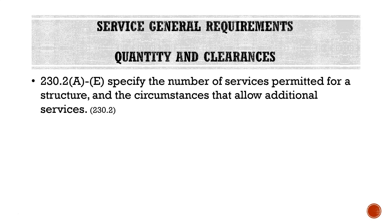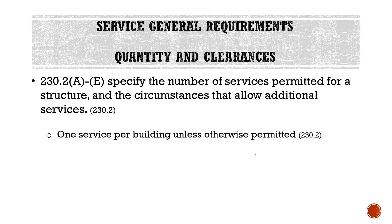Looking at our service general requirements, we have quantity and clearances. Section 230.2A through E specifies the number of services permitted for a structure and the circumstances that allow additional services — one service per building, unless otherwise permitted. Unless we have a special rule or exception, we're allowed one service entrance per building. There are a variety of circumstances that allow you to have more than that, but that is the general rule.